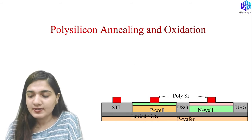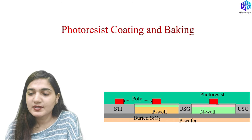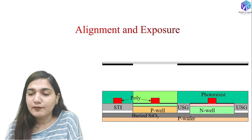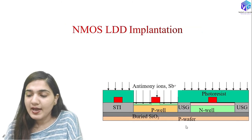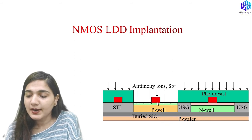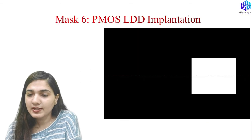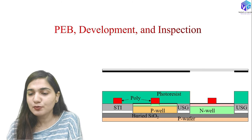After photoresist coating and baking, mask 5 is used for the N-MOS lightly doped drain (LDD) implantation. After alignment, exposure, PEB development, and inspection, the LDD implantation is performed with antimony ions inside the N-well structure. After stripping the photoresist, the same process is repeated for the PMOS LDD implantation, using BF2 (boron fluoride) ions in the PMOS region.